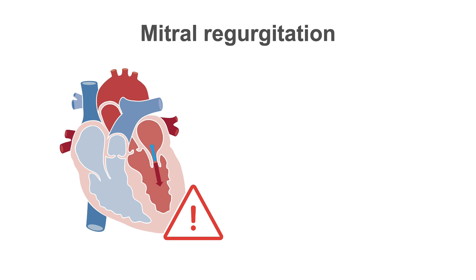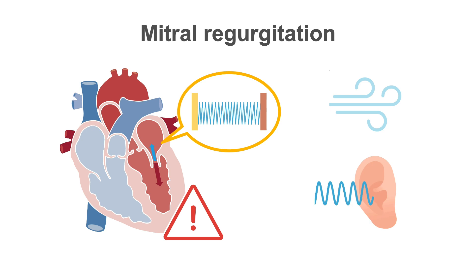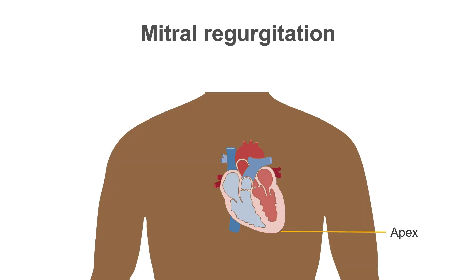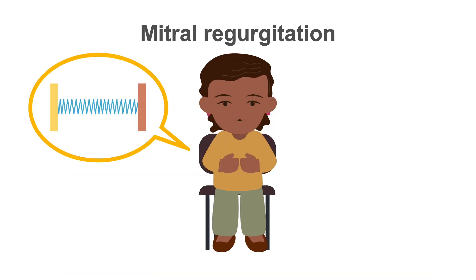If mitral valve dysfunction is present before or after infective endocarditis develops, the incompetent mitral valve will allow blood to pass retrograde into the left atrium during systole. The characteristic murmur of mitral regurgitation is constant in intensity, blowing, and high-pitched. It is loudest at the apex with radiation into the axilla and left infrascapular region, and is diminished by sudden standing.